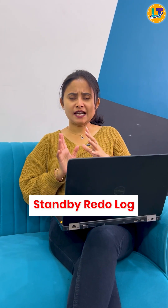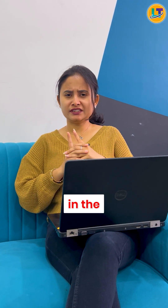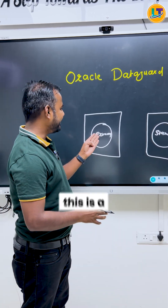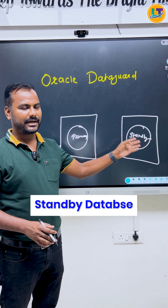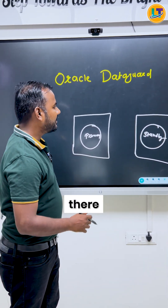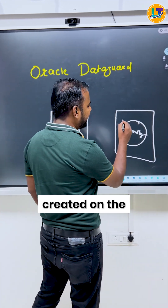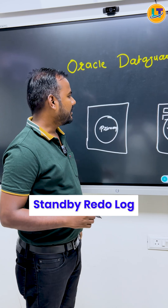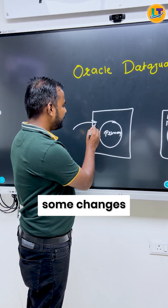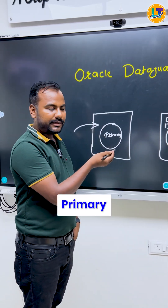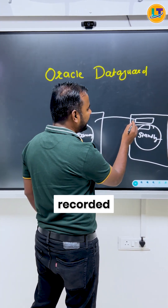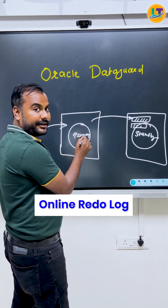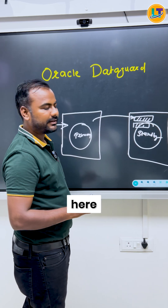Ankur sir, what is the use of standby redo log in the Data Guard environment? In the Data Guard environment, let's say this is a primary database and we have standby databases. Standby redo logs are always created on the standby side. Whenever changes are made from the primary, those changes will be recorded into the standby redo logs, and your data will come from your online redo log to the standby redo log.